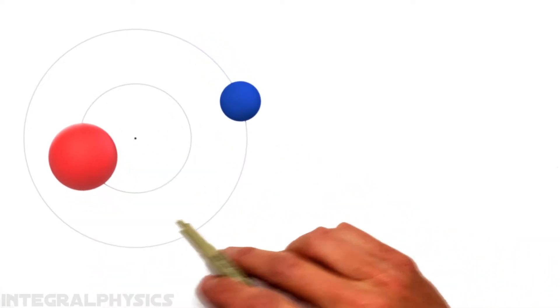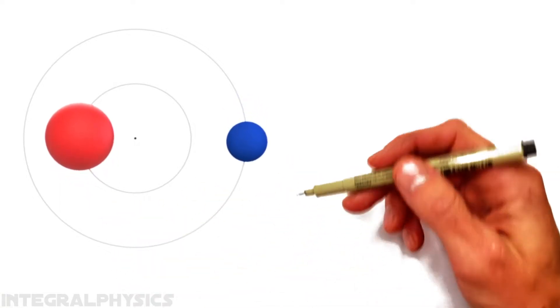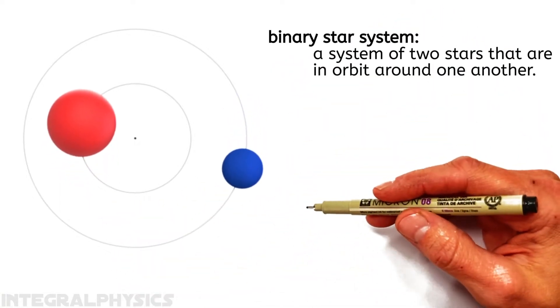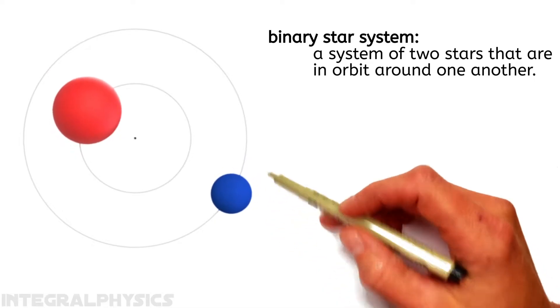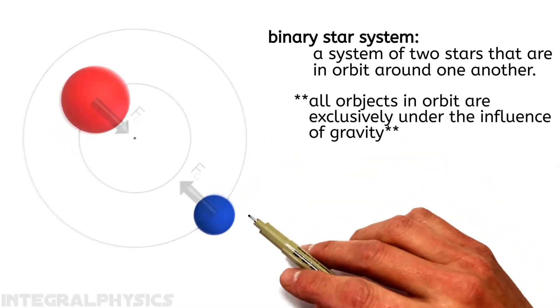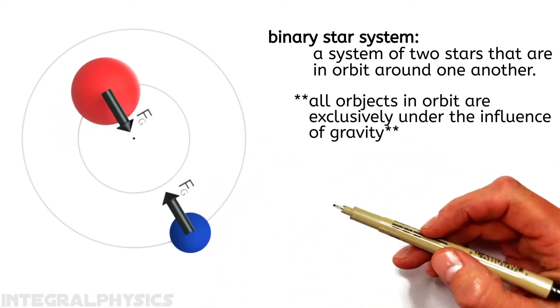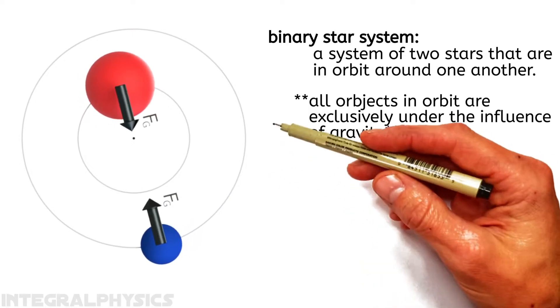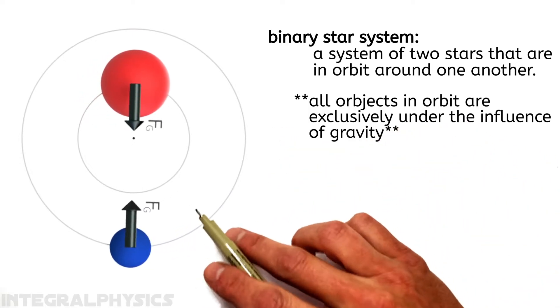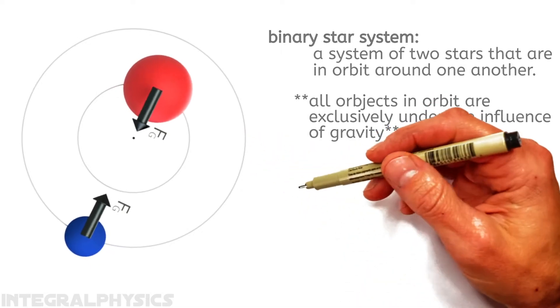Now, there's nothing magical happening in the system of two stars orbiting each other, or in what's called a binary system. Going back to Newton, all objects in orbit are exclusively under the influence of gravity, free-falling toward each other like an apple toward the Earth. And that holds true here, it's just now we have two really big apples.